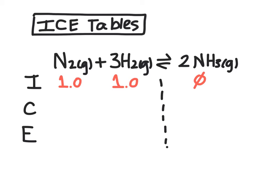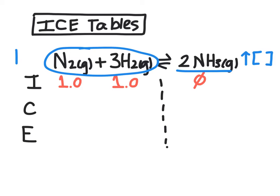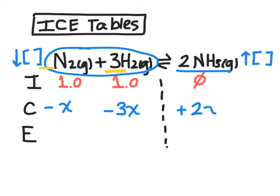We can talk about the change of our concentrations in relative terms. First we need to figure out the direction of change. If we start only with reactants and have no product, the concentration of products must go up to reach equilibrium, meaning the concentration of reactants must go down. So the change is negative for our reactants and positive for our products. We represent the change for N₂ as just X because there is a coefficient of 1 in front of nitrogen. The change for H₂ is 3X because there is a 3 in front of hydrogen, so it will change at 3 times the rate of nitrogen. And the change for ammonia will be 2X, since the coefficient is 2.